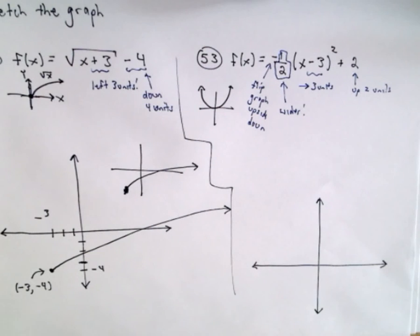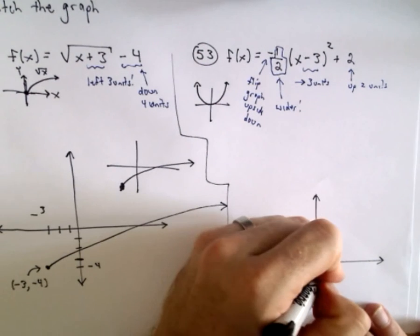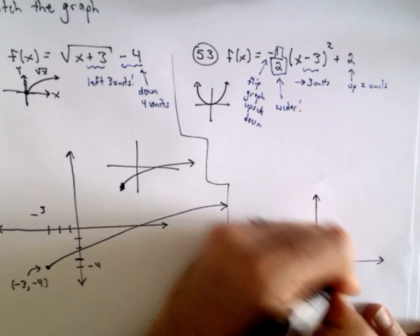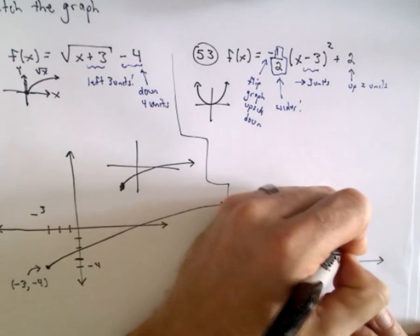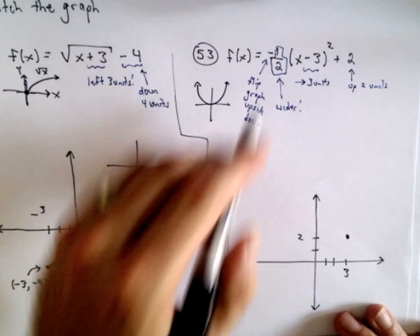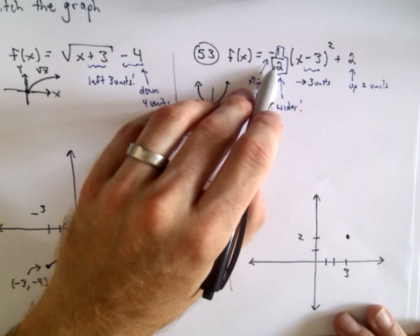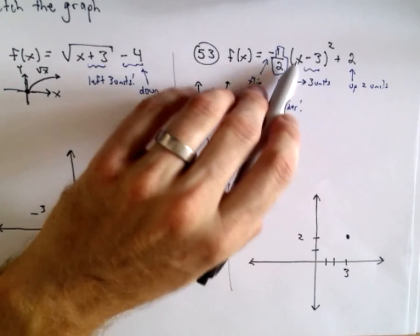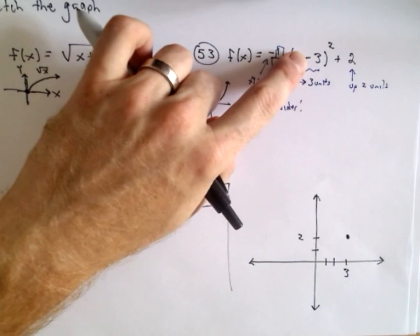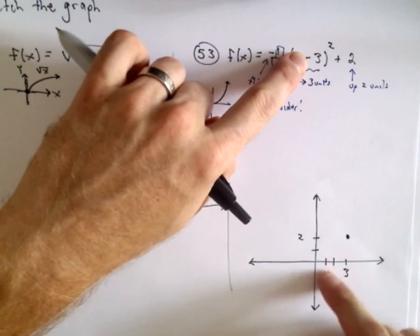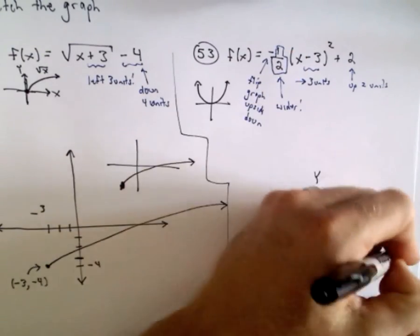Okay, so a couple things going on here. So I think, okay, I'm going to go one two three units to the right, one two units up. I know it's going to open downwards because of the negative. The one half is going to make it a little bit wider. So let's see, if we plug in x equals zero, what's that going to give us? I'm just basically finding where it crosses the y-axis just to plot one extra point.